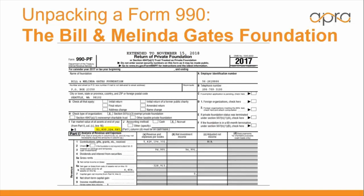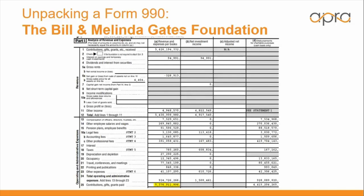Once we get into the Form 990 itself, you can see at the top that this is the Form 990 from 2017. Foundations will sometimes operate on a calendar year basis — January 1 to December 31 — or on a fiscal year basis, such as July 1 to June 30, and it will specify at the top of the form which it is. Looking at the center of the form, the fair market value of all assets at the end of 2017 for the Bill and Melinda Gates Foundation was roughly 51.8 billion dollars. Farther down on line 25, contributions, gifts, and grants paid over the course of the year worked out to roughly 5.3 billion dollars — which is 10.3 percent of total assets, well above the required 5 percent.